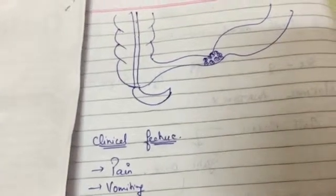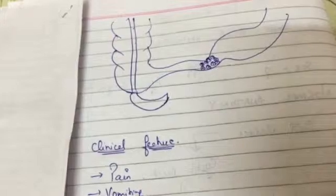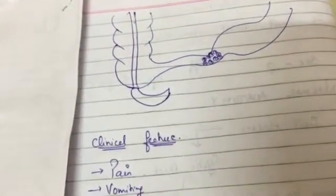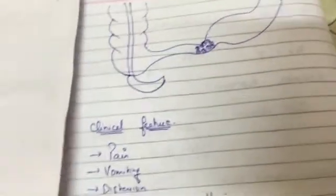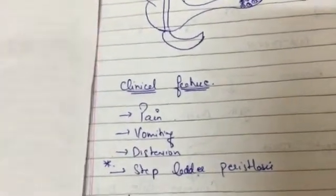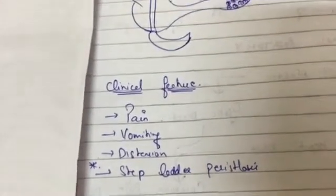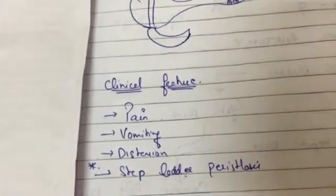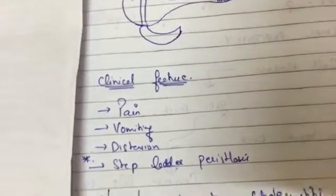The next thing is the clinical features seen with gallstone ileus. The first is pain, which is seen in almost all small bowel obstructions. The second is vomiting — regurgitation of food coming out from the mouth. The third is distension, because the food cannot pass. The most characteristic feature seen in gallbladder ileus is borborygmi — audible bowel sounds.